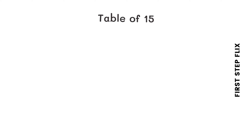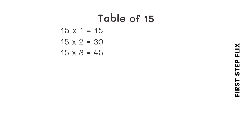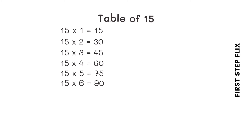Let's repeat one more time. 15 ones are 15. 15 twos are 30. 15 threes are 45. 15 fours are 60. 15 fives are 75. 15 sixes are 90.